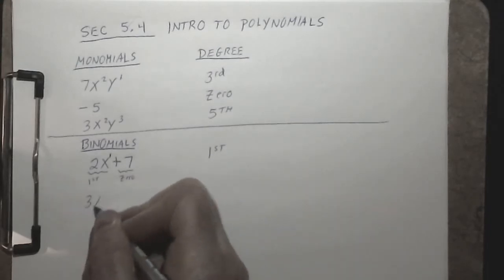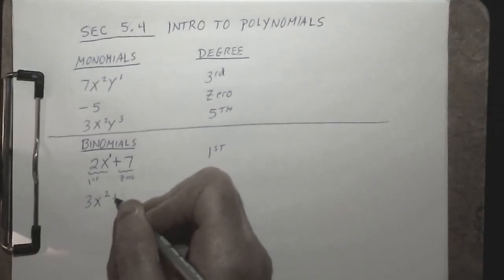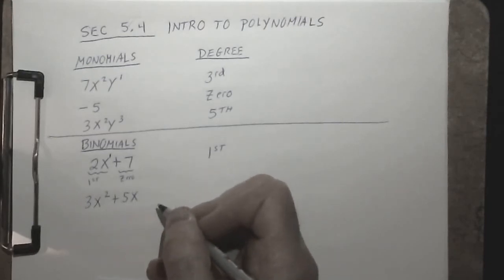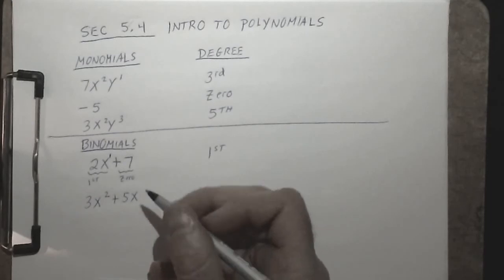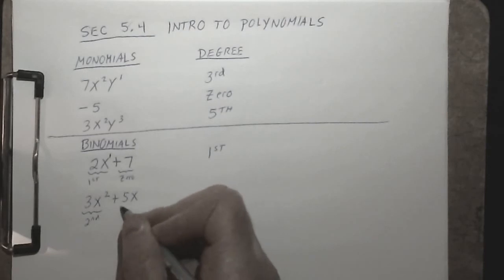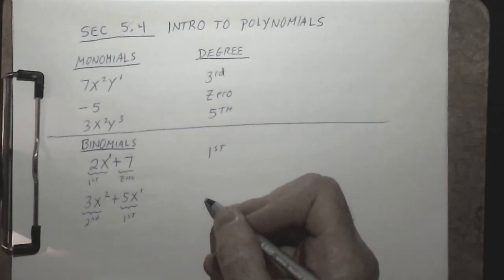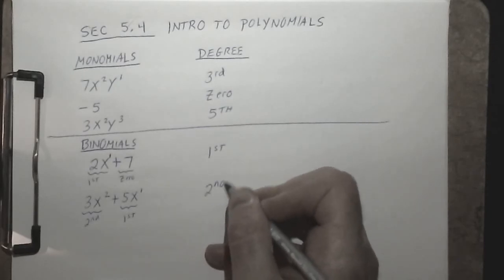Another example of a binomial is 3x² + 5x. The first term is of the second degree and the second term is of the first degree, so the degree of this entire binomial would be a 2nd degree binomial.